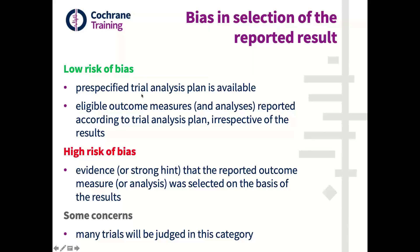To summarize: low risk of bias requires a pre-specified analysis plan available and eligible outcomes and analyses reported according to the plan, irrespective of the results. High risk of bias means any evidence that the reported outcome measures or analyses were selected on the basis of the results. Some concerns covers all different situations where we don't have complete information, which will probably be the most frequent situation.